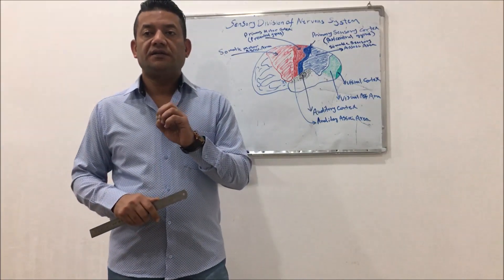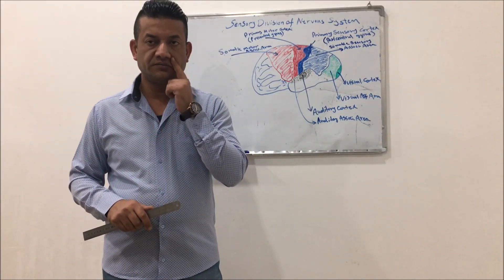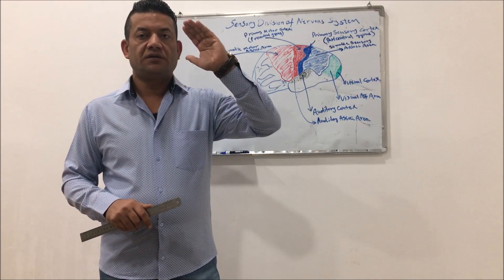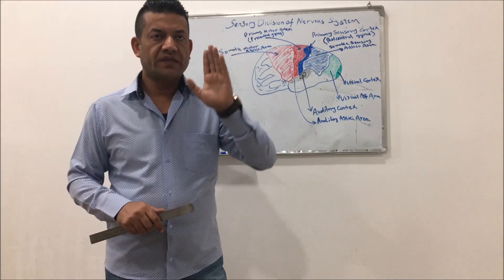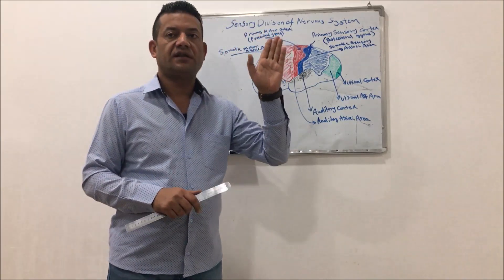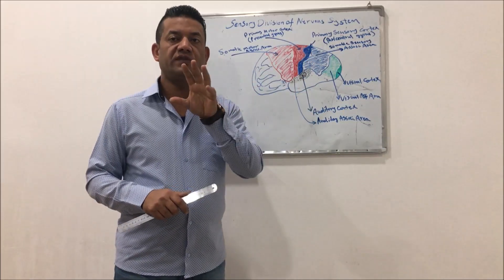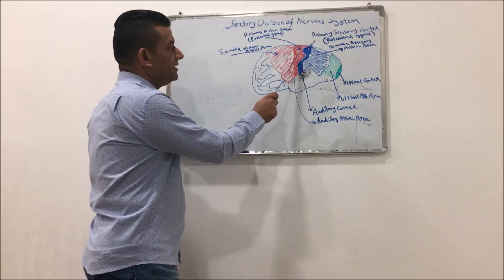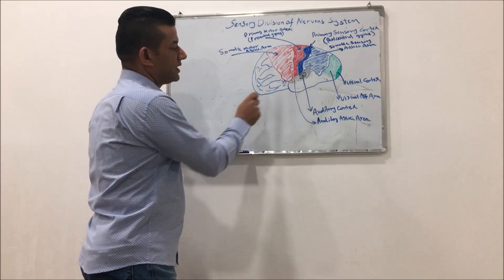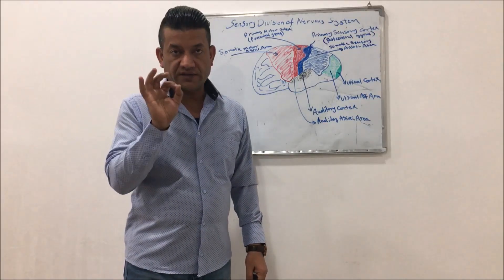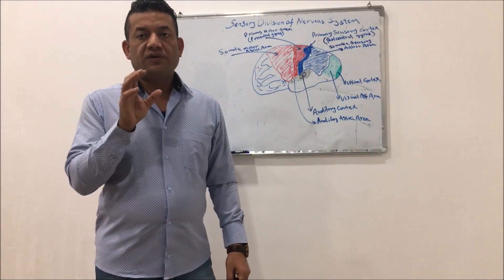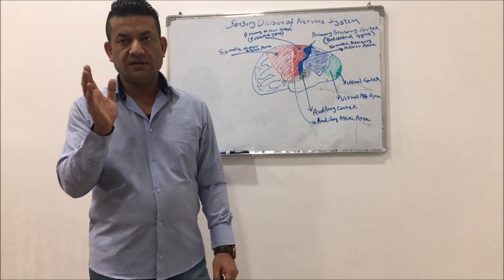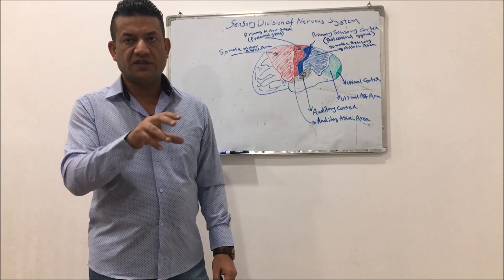The sensory nerve signals, or sensory tracts, travel throughout the spinal cord upward toward the brain, and they must pass throughout the thalamus. From there, these neurons or axons will travel to specific sensory areas in the brain. But we have to recall that before entering the thalamus, the sensory tracts will decussate.